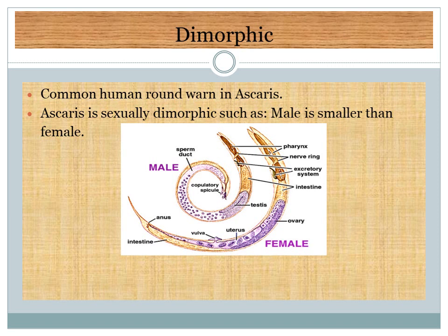Nematodes are sexually dimorphic — they have two forms: the male is smaller in size and the female is larger. This dimorphism is observed in Ascaris. The figure shows the male form, which is smaller, and the female form, which is larger than the male — that condition is known as dimorphism.